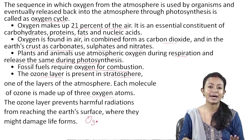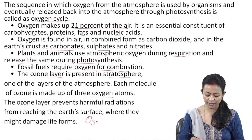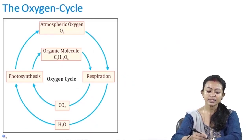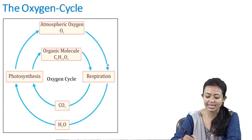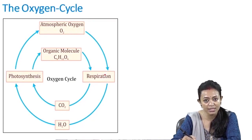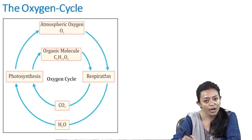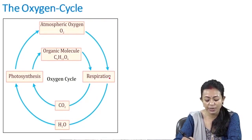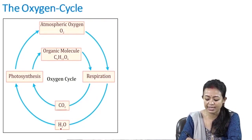Plants give out a huge amount of oxygen to the atmosphere, thereby keeping the balance of oxygen. To explain the diagram: atmospheric oxygen is taken in for respiration, for combustion, for making carbonates and sulfates, and is an integral part of carbohydrates, proteins, and nucleic acids.